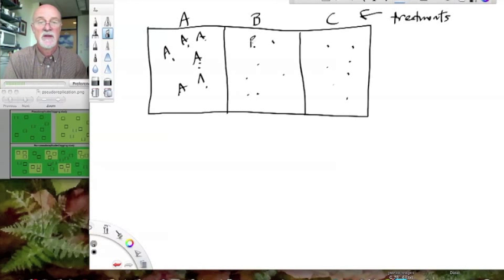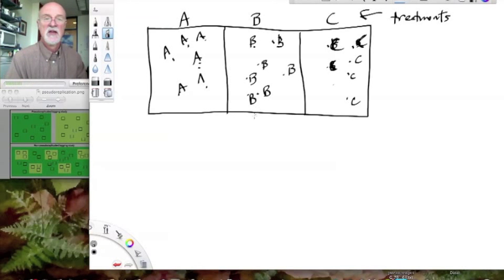And then we go out and we find random individuals within these plots that each receive these treatments. So these get A. These get B. And they're random individuals. So everything seems like it ought to be okay. And we have individuals getting treatment C over here.